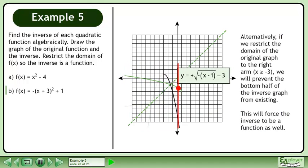Alternatively, if we restrict the domain of the original graph to the right arm, we will prevent the bottom half of the inverse graph from existing. This will force the inverse to be a function as well.